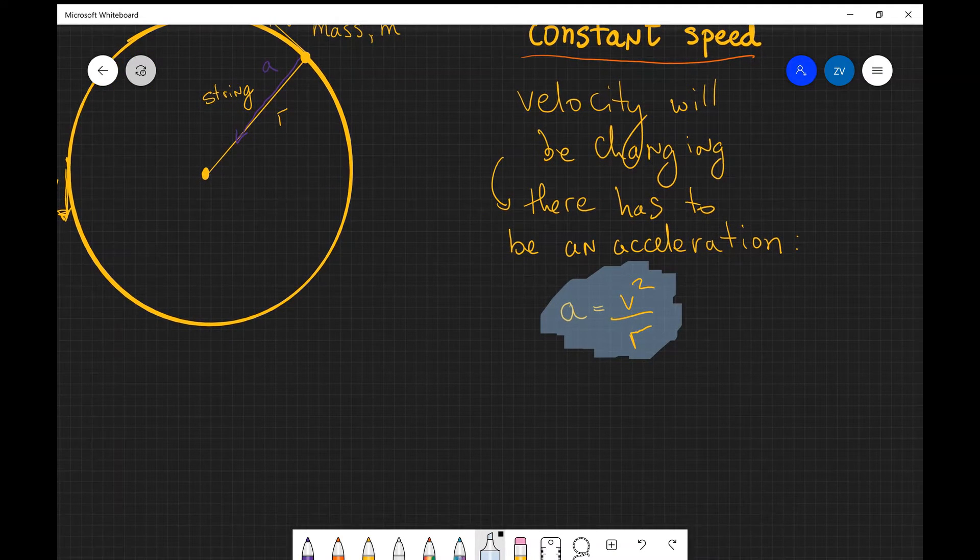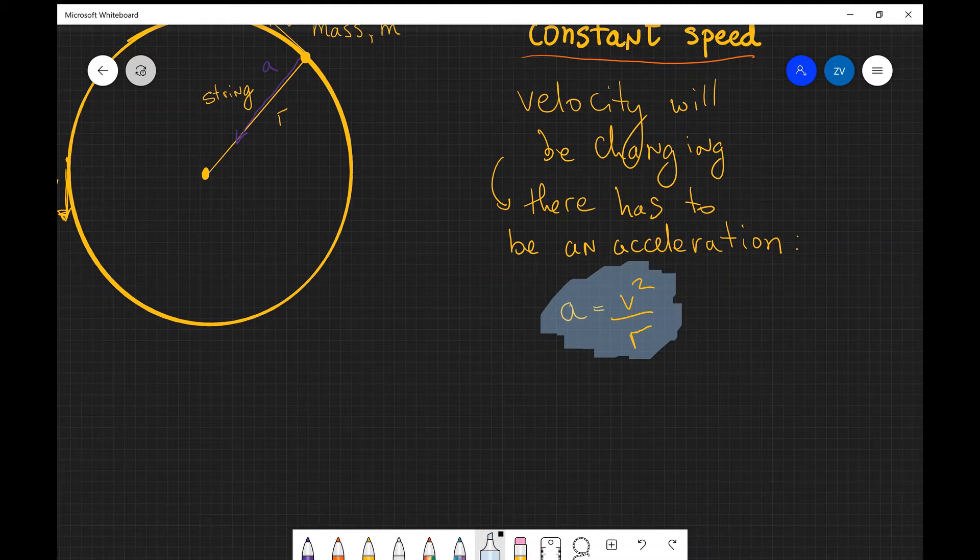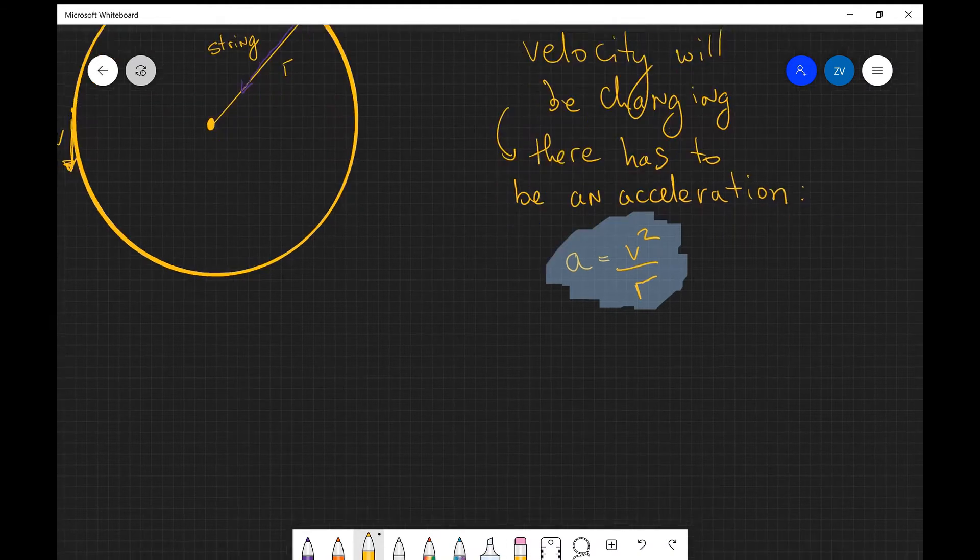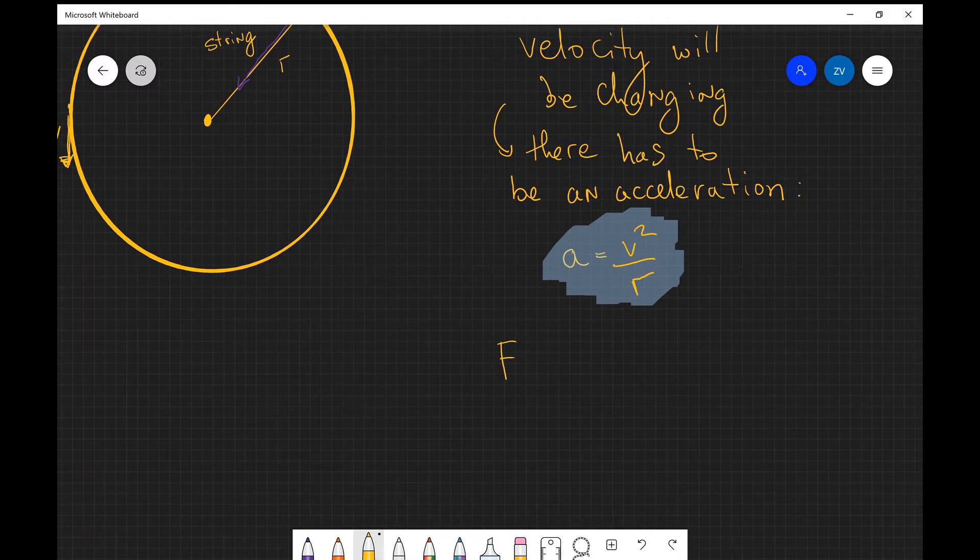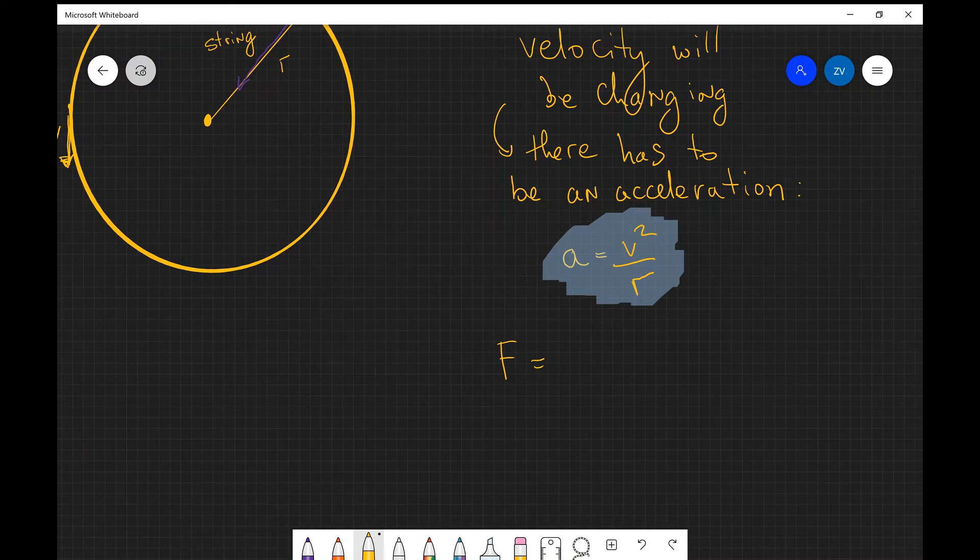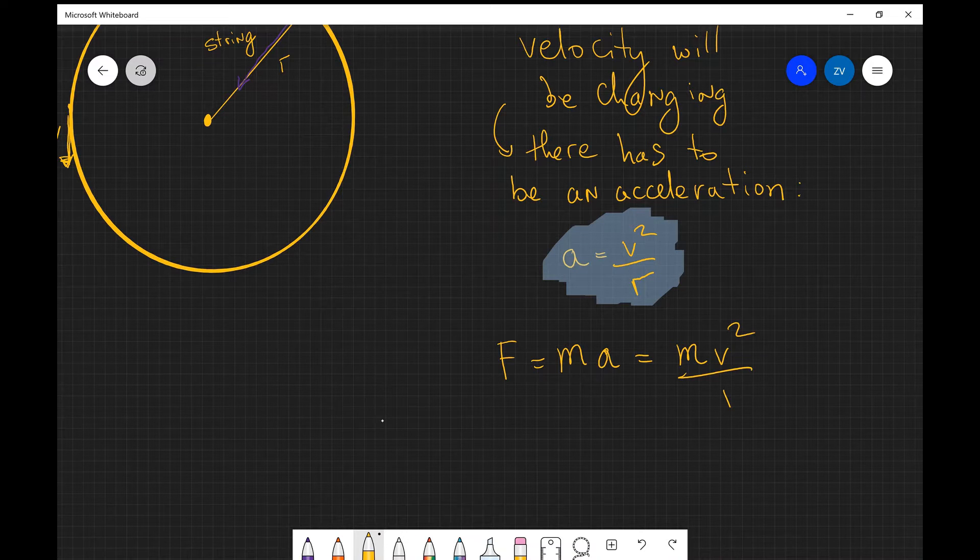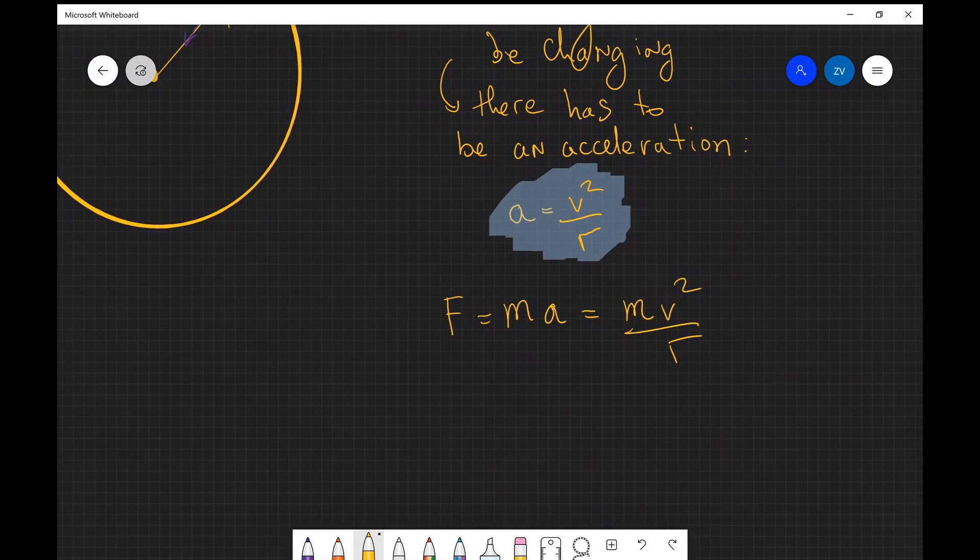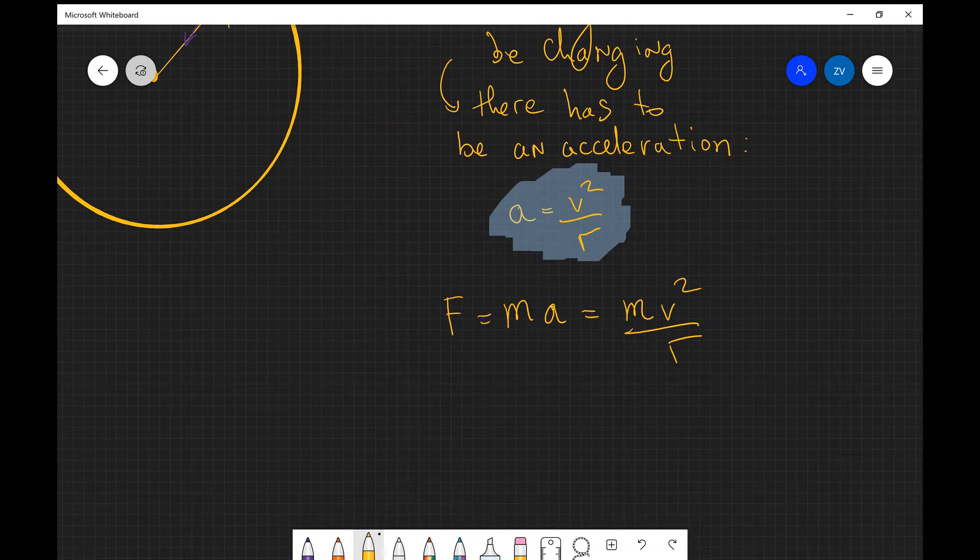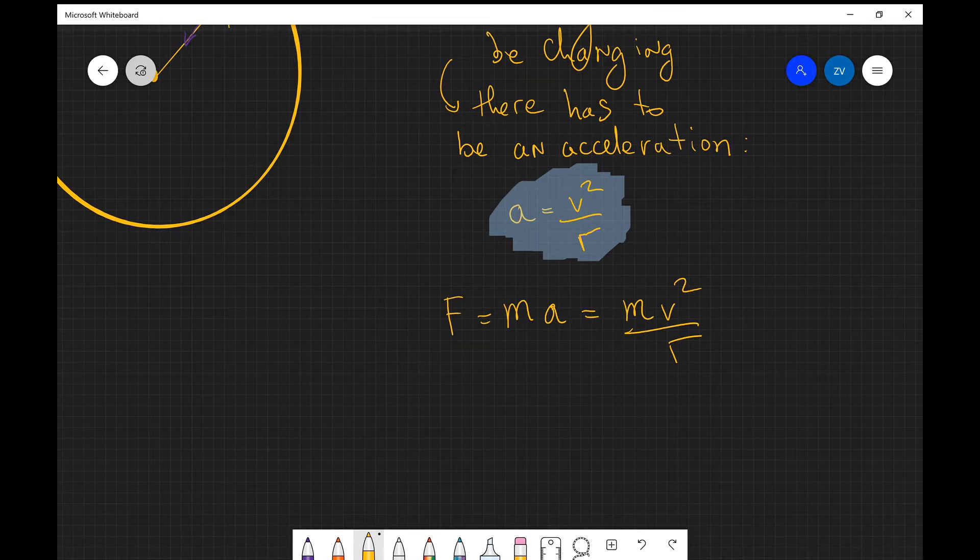We can take this a step further in saying that if there is acceleration, well there has to be a force acting as well, because the net force acting on an object is proportional to the acceleration if the mass is constant. In other words, F is equal to ma. So if the acceleration is v squared over r, the net force will be m v squared over r. And this is the formula for the centripetal force. So F is equal to m v squared over r.